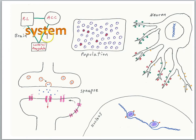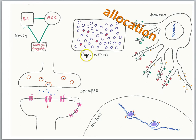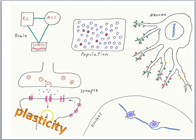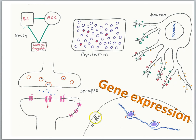We can think of memories at the system level, where multiple brain regions might be involved in a memory or an engram. We can also think of an engram as involving an allocation of some neurons to a given memory, some synapses to a given memory — we're going to call that allocation. Plasticity is a key factor in how brains learn and make memories, so we have synaptic plasticity.